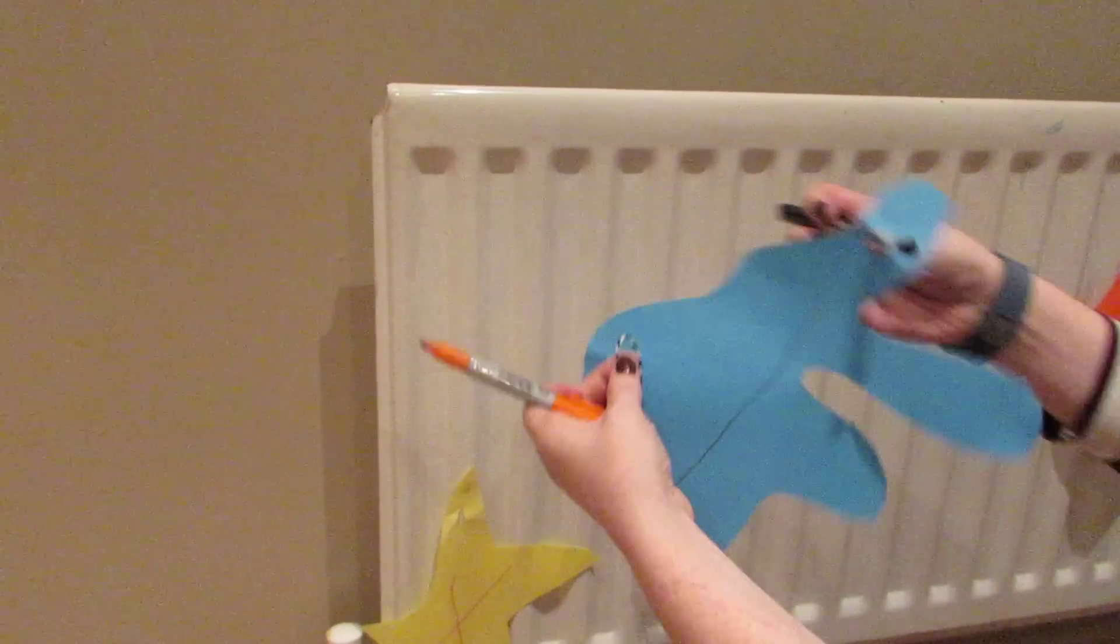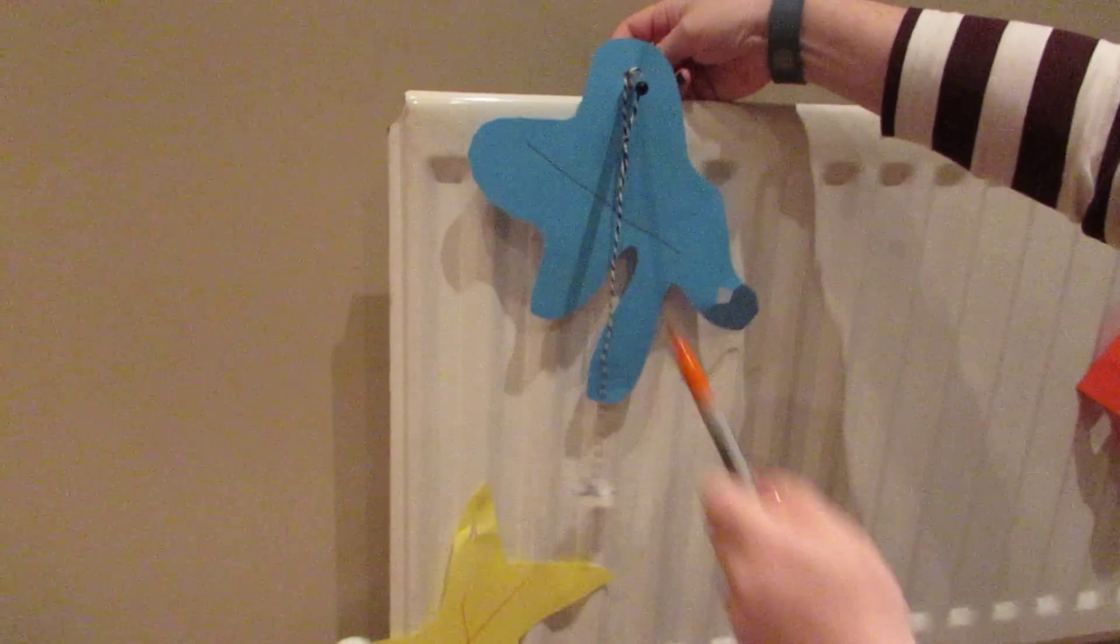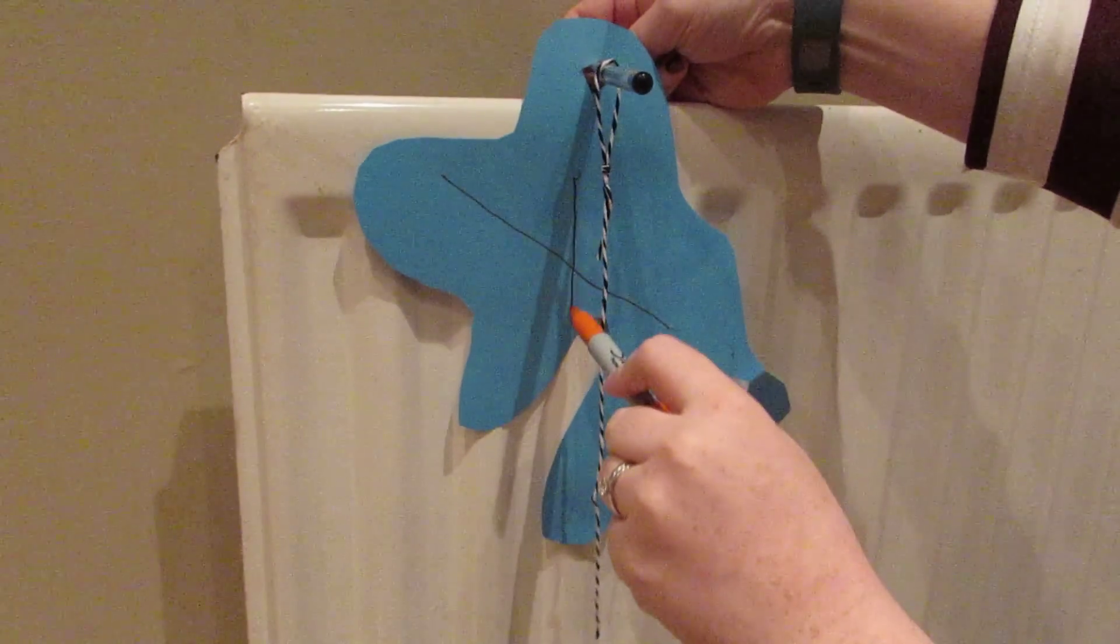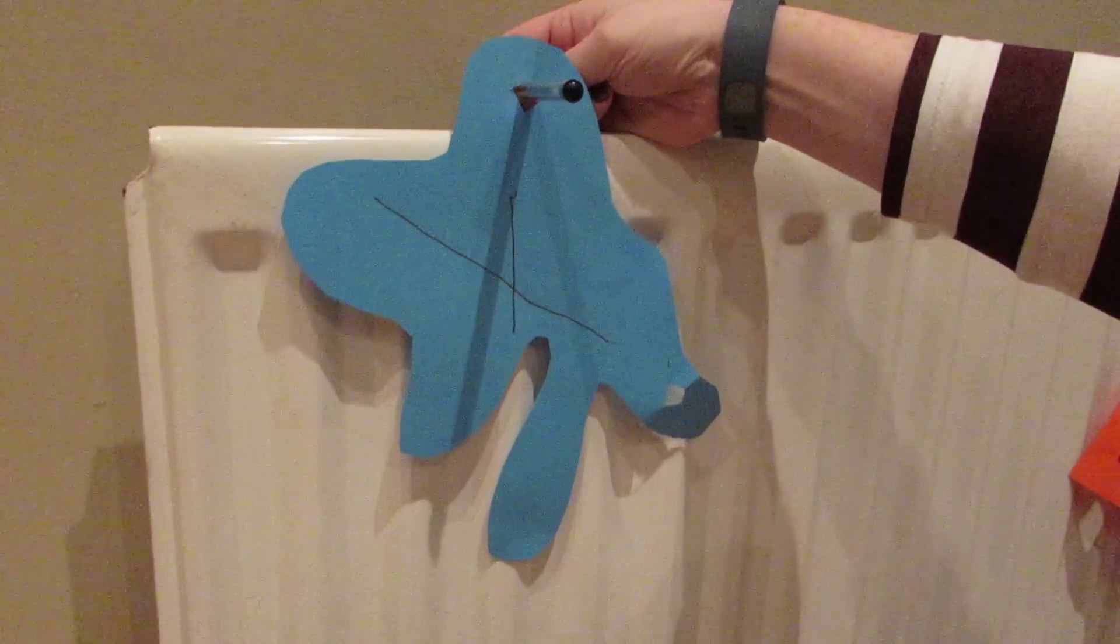So swap over to the second pivot. Make sure they can both swing freely and draw a line straight down. And that is the centre of mass for my second shape.